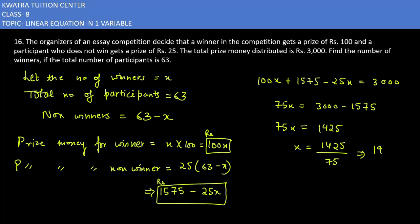Our non-winners will be 63 minus 19, which equals 44. So yes, this is the answer for the 16th one. Now we have the next one, 2.3, so let's start.